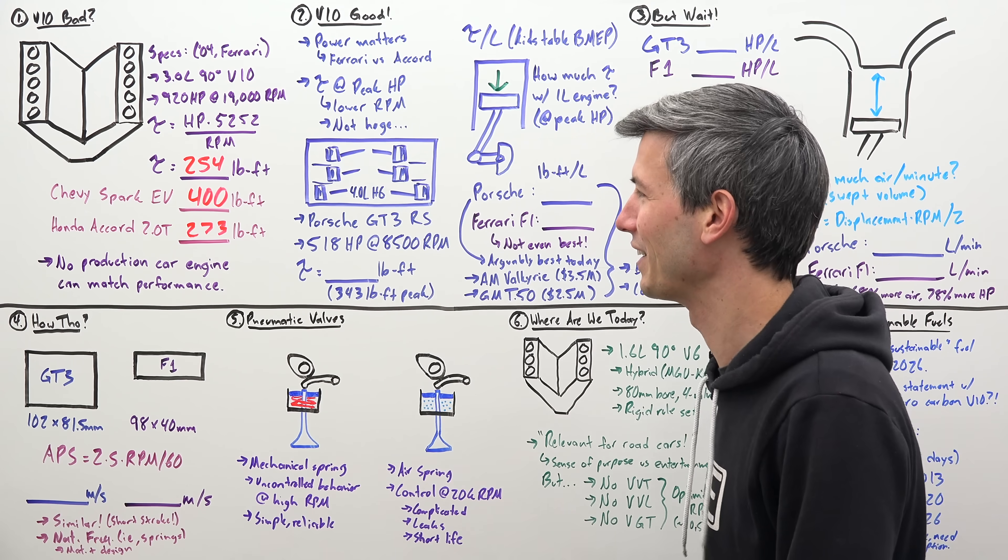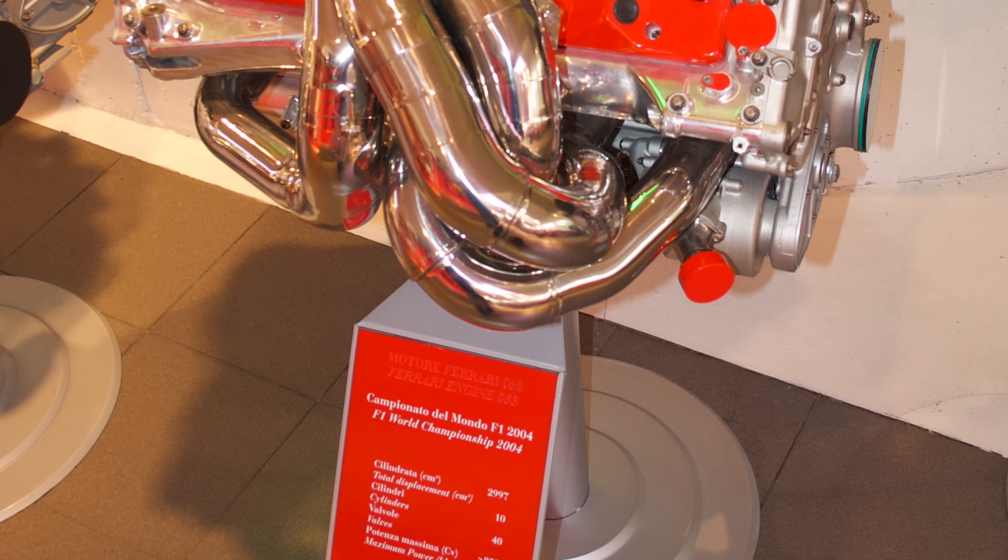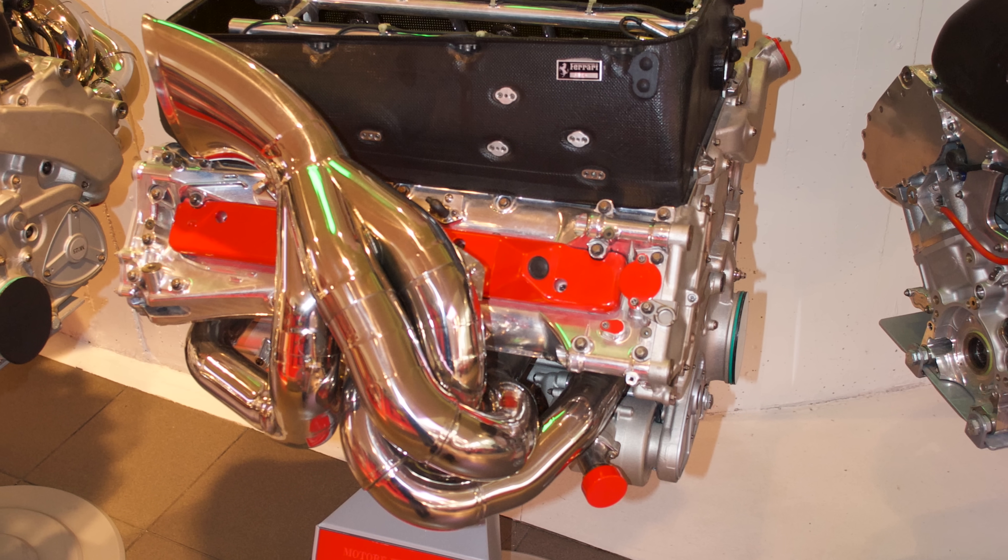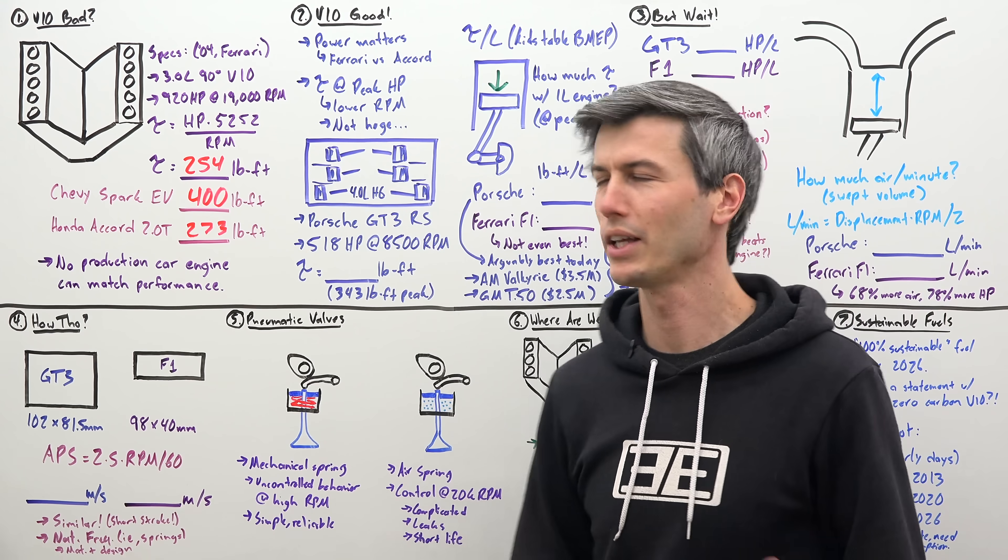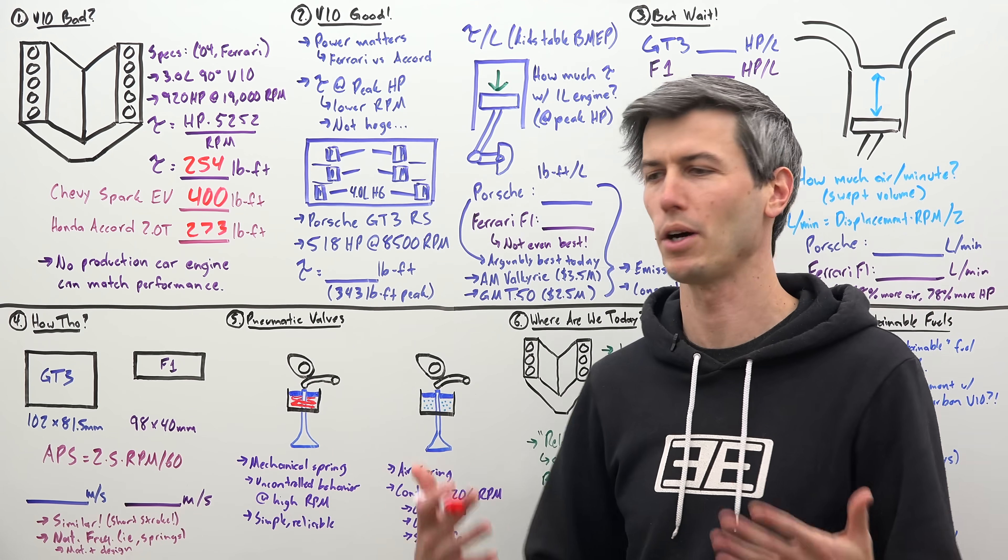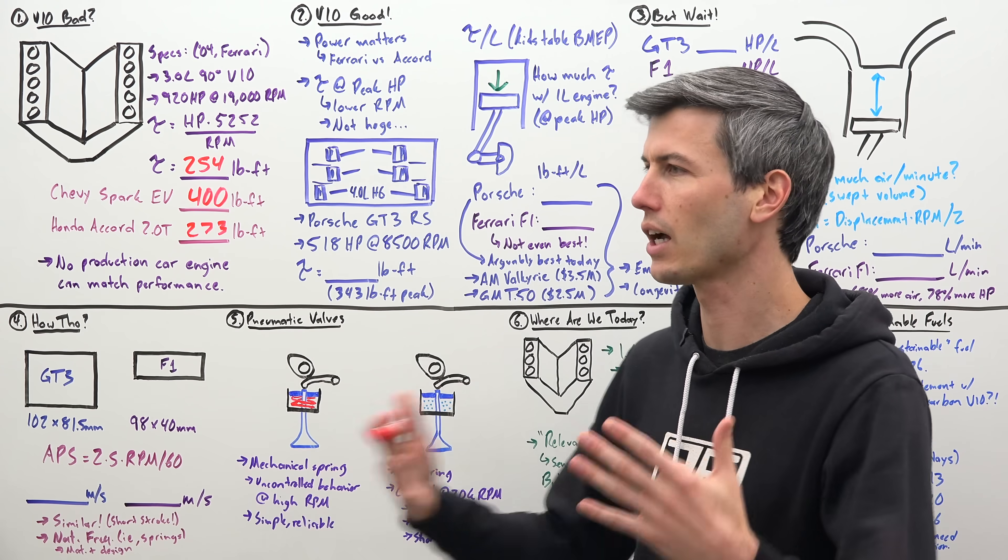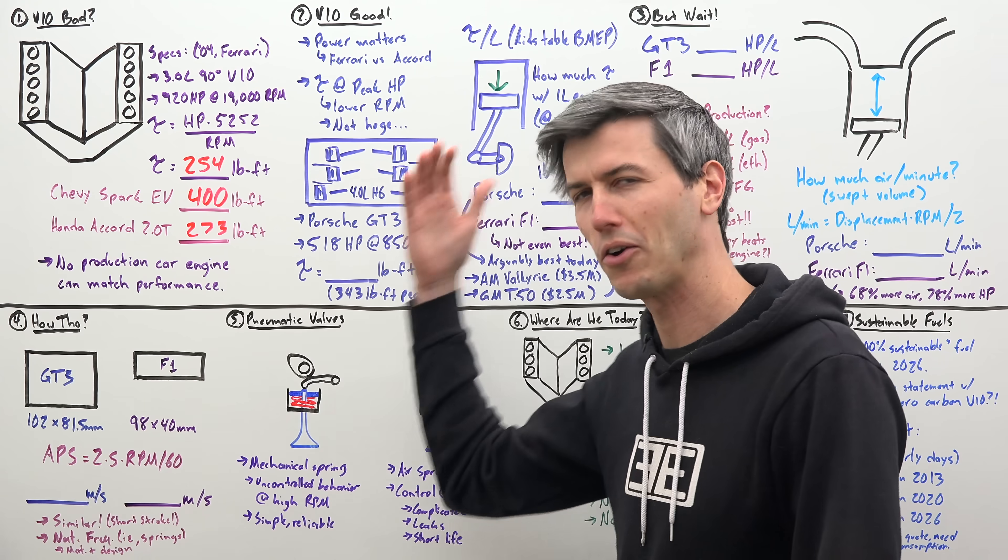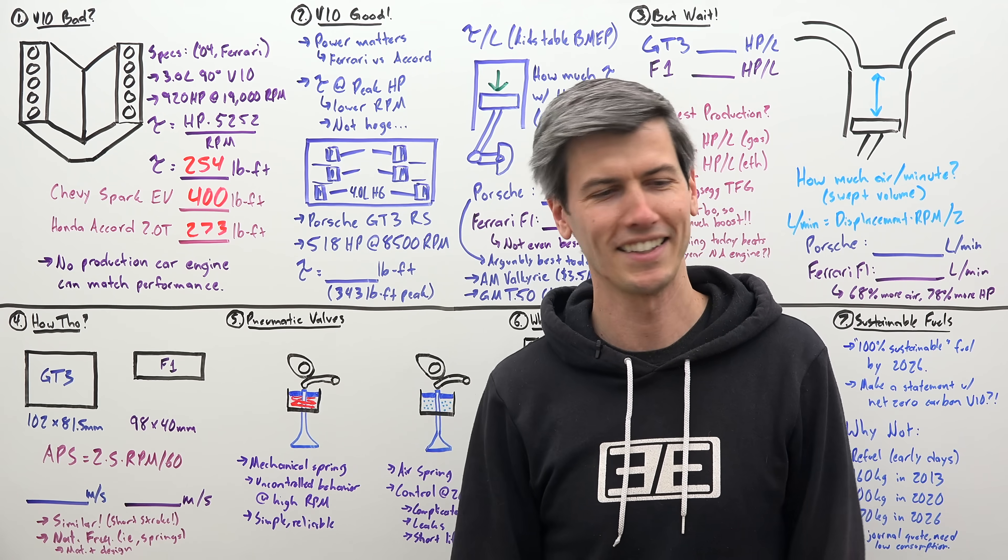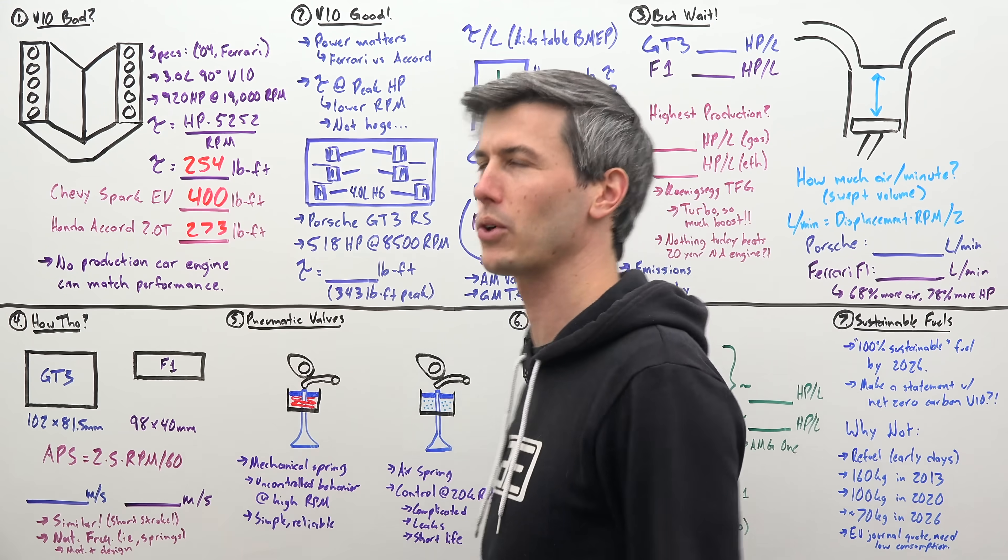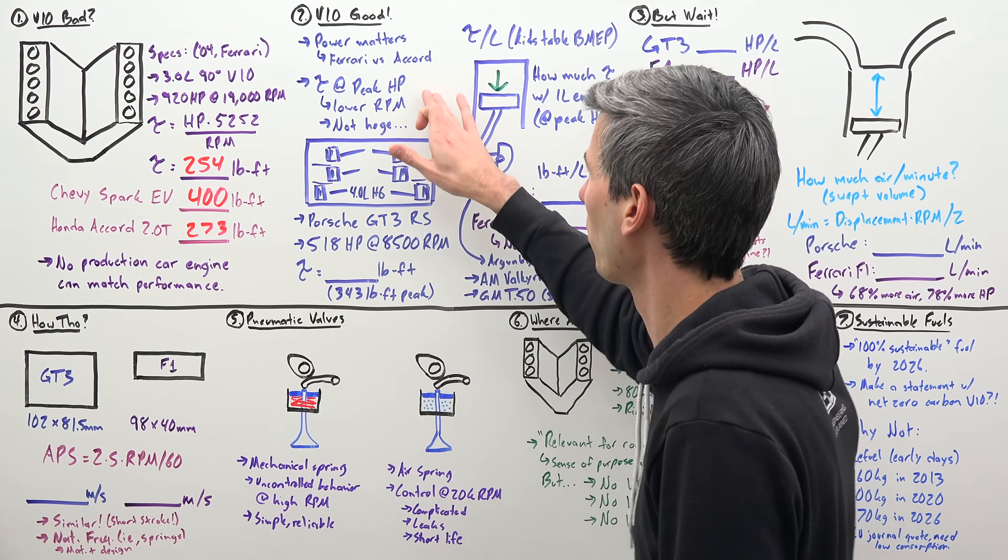Well realistically, no production car engine of all time can match the performance of what this engine was capable of. So why share these silly facts about torque? It helps illustrate and show that power is truly what matters, and that torque without context is really a meaningless thing to compare. So I think we can all agree a Ferrari F1 car is going to be faster than a Honda Accord, and yet you can show that this has more torque. Torque doesn't really matter. Power is the important thing.